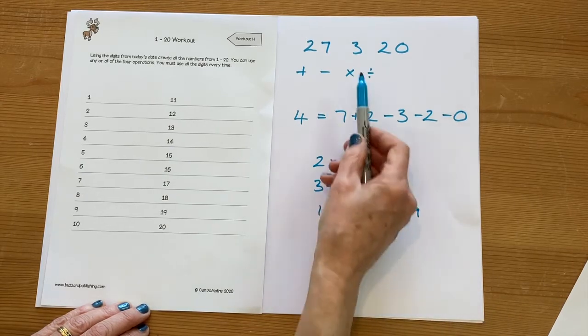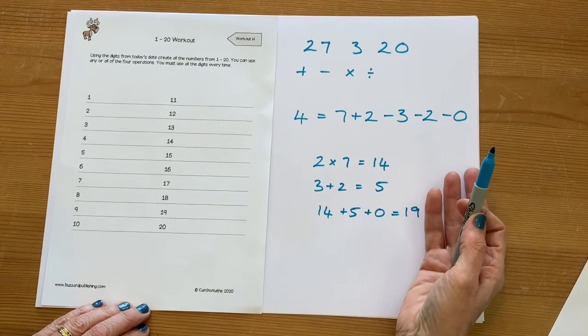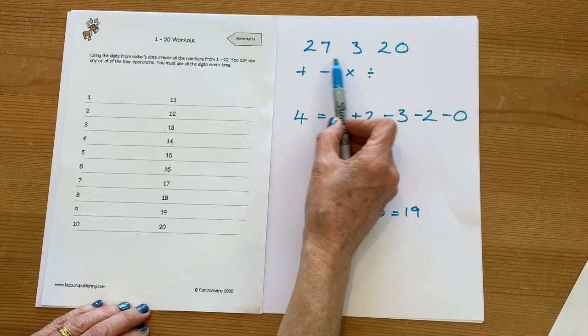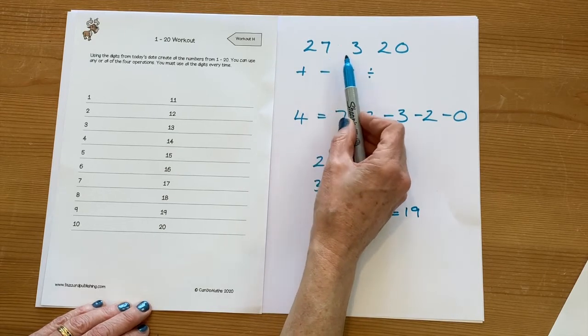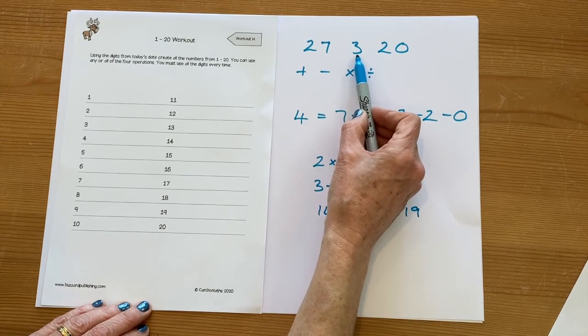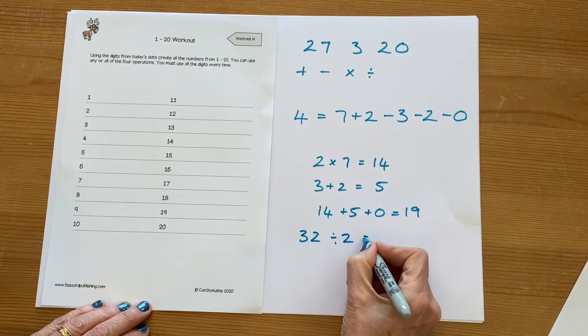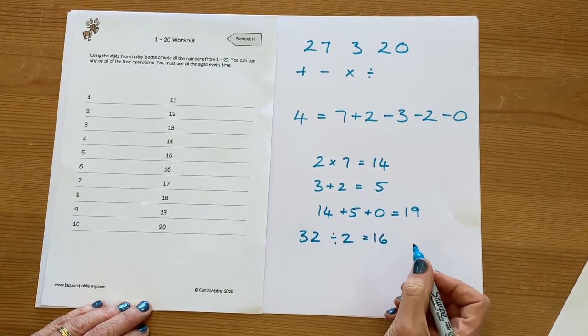So you could subtract two of the digits first, multiply two of the others, and so on and so forth. Don't forget you could put them together to make a two-digit number. So I could do something like 32 divided by 2, which would give me 16, and then I can do something with 16 with the digits that are left.